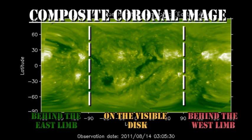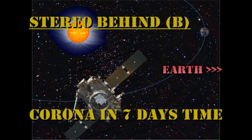For the longer term forecast, we can see that there are two regions due to come over the east limb in the next day or two. There is an even brighter one following along behind, but those are 5 or 6 days away. Let's see how active those two regions behind the east limb are by going to the Stereo B data — a spacecraft located 90 degrees behind the Earth, seeing the corona as we will see it in about a week's time.